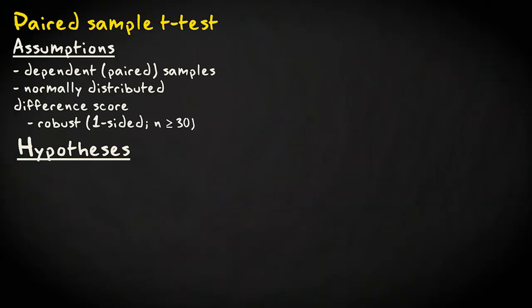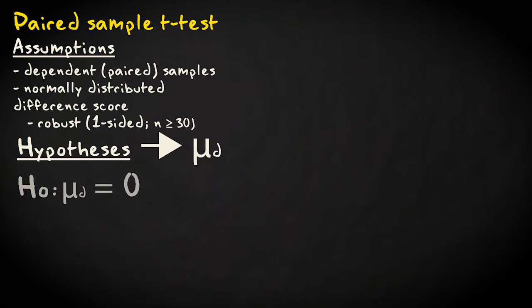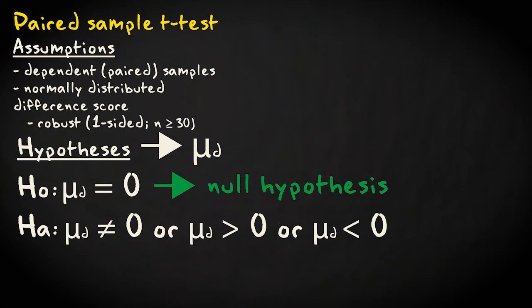The statistical hypotheses are expressed in terms of the mean difference score, mu sub d, in the population. If there's no difference in the population, we expect mu sub d to equal 0 — this is the null hypothesis. Possible alternative hypotheses are that the mean population difference score is unequal to 0, greater than 0, or smaller than 0.